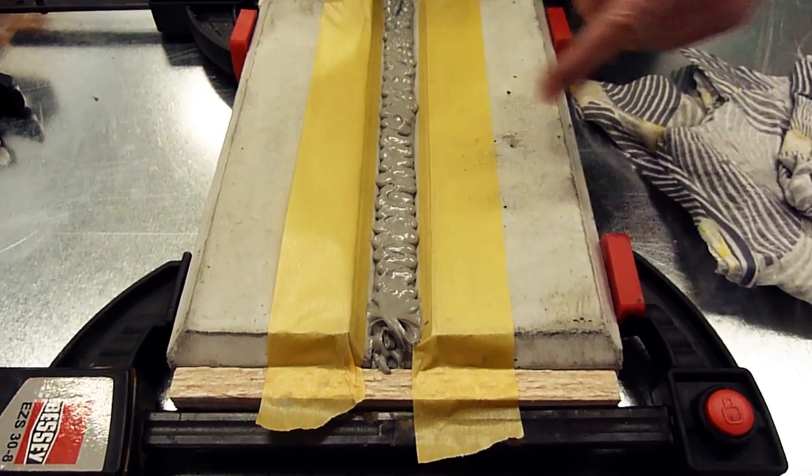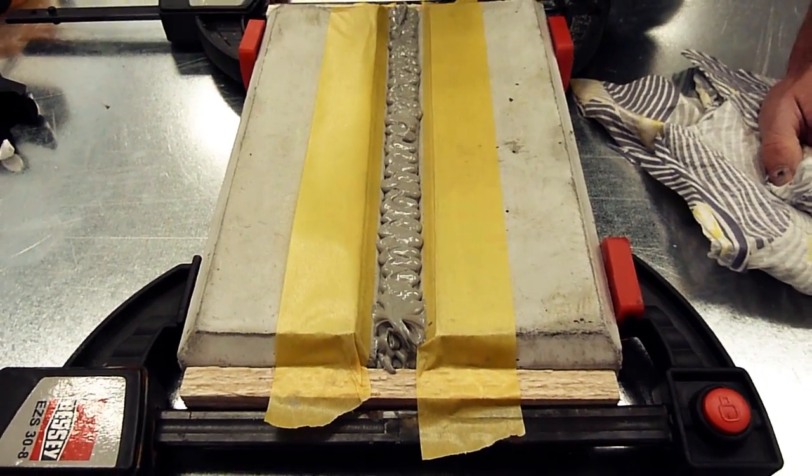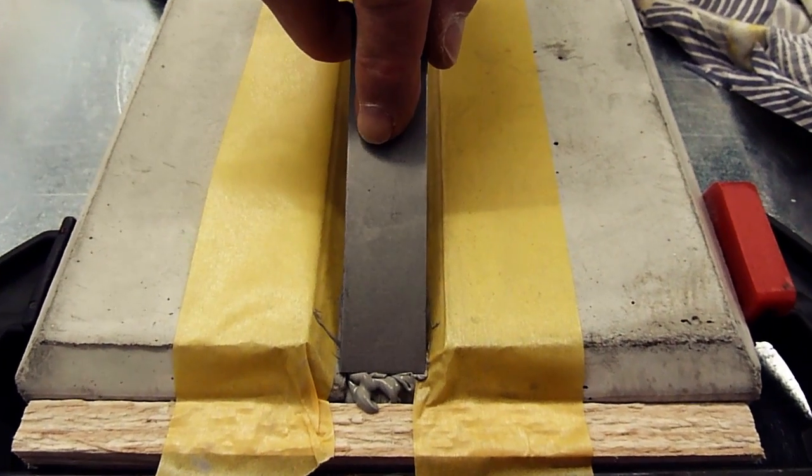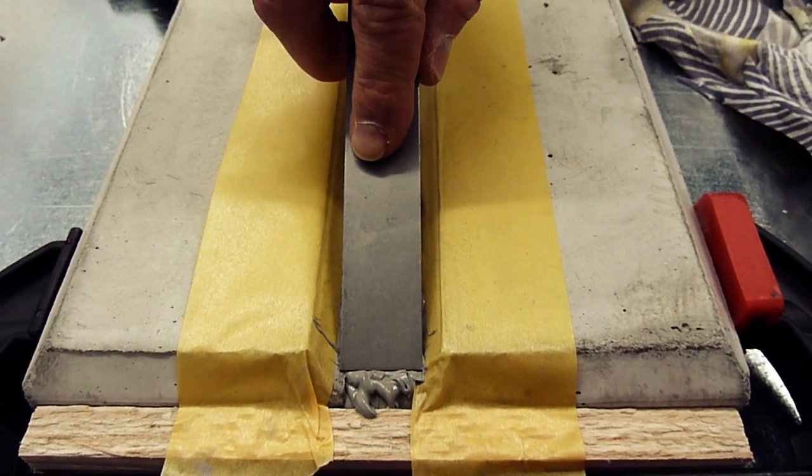When enough sealant mass is installed into the joint, we smoothen the surface and at the same time push in the sealant mass.